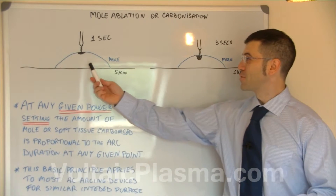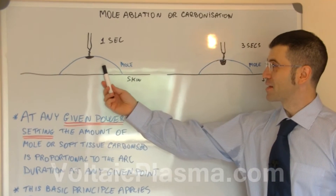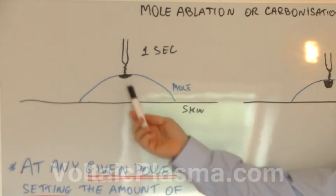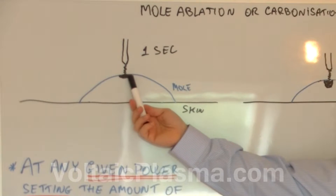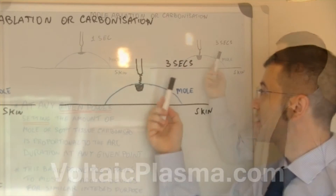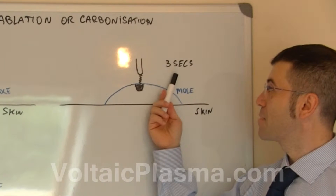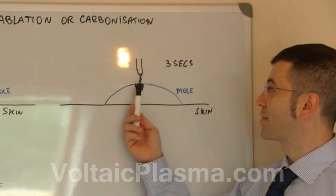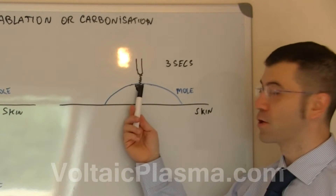we have made two representations of a mole. In this representation, for example, we apply the arc for one second and we see that the carbonisation effects are very shallow. In this other figure here, we apply the same power setting for three seconds instead and the carbonisation effects are much deeper.